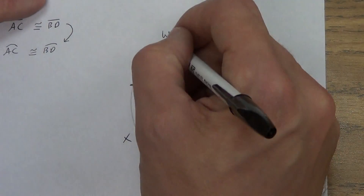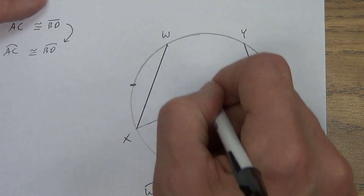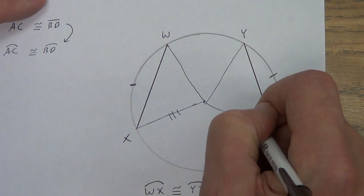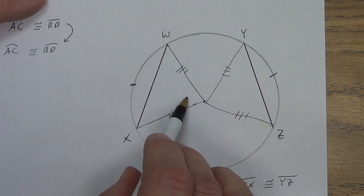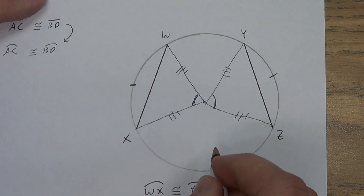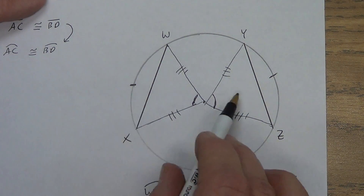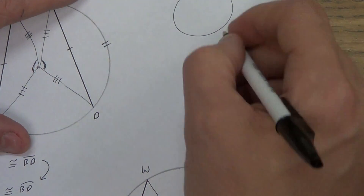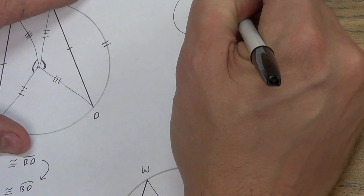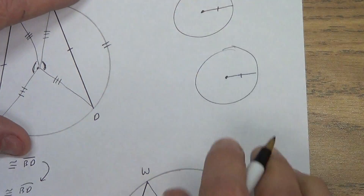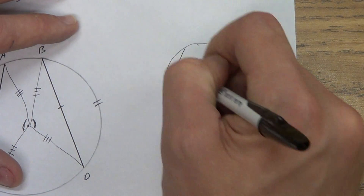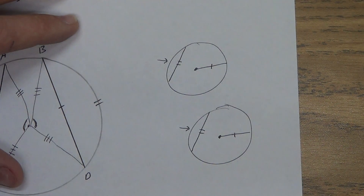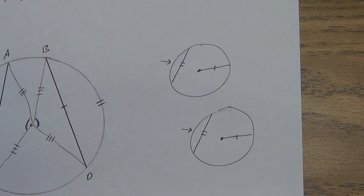Working backwards from the congruent arcs direction: draw the radii again — congruent radii, radius never changes. Congruent arcs lead to congruent central angles. Side-angle-side proves the triangles are congruent, and CPCTC proves the chords are congruent. It works the same way if you have separate circles, as long as the circles themselves are congruent — meaning they have congruent radii. If someone tells you this chord is congruent to this chord, then automatically you can say that arc is congruent to that arc.